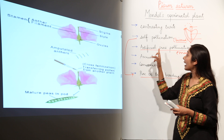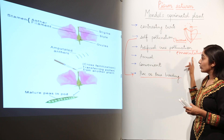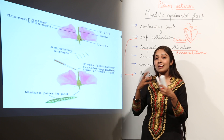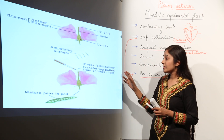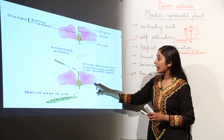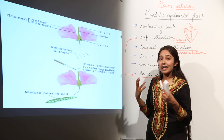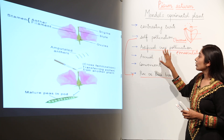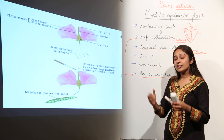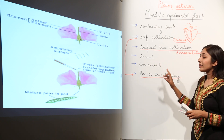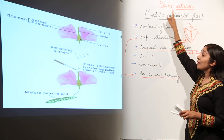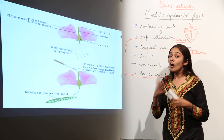Thirdly, artificial cross-pollination was possible through emasculation — removing the stamens or anthers from the flower, then dusting pollen grains of the desired trait from another flower onto the stigma to get the desired result. Fourthly, the garden pea plant was annual, so Mendel could get results generation after generation easily. Fifthly, it was convenient and easy to cultivate. These are all the reasons why Mendel chose Pisum sativum — the garden pea plant — as his experimental plant.